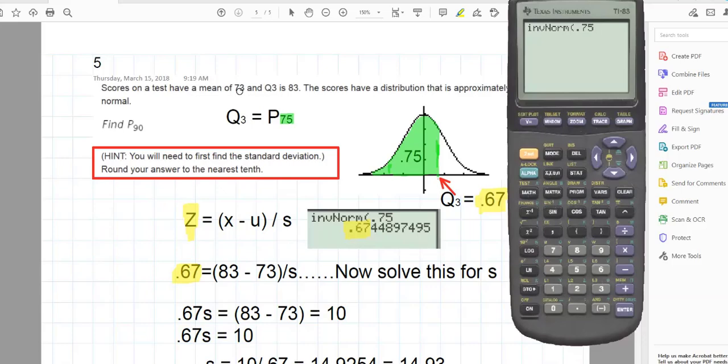Because what do I have in this problem? I have Q3 is 83, that's x. I have the mean is 73, that's mu. I want to find s. It said, here's a hint. You'll need to find the standard deviation first. So I need the z, and the z that I'm looking for is the z-score for the 75th percentile.